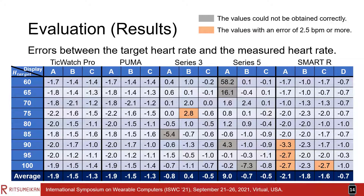These are the errors between the target heart rate and the measured heart rate. Positive values indicate that the heart rate was higher than the target heart rate, and negative values indicate that the heart rate was lower. The gray points indicate results where the values could not be obtained correctly. The orange points indicate results with an error of 2.5 BPM or more. In many results, the accuracy was very good, with an error of less than 3 BPM.